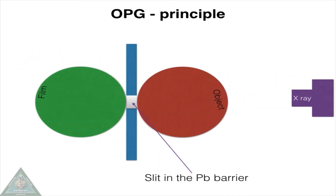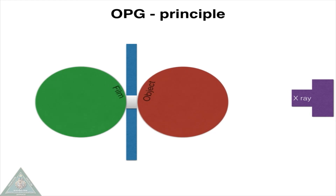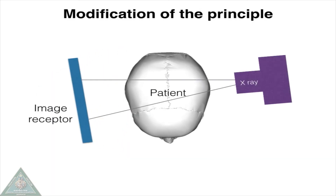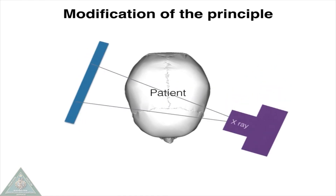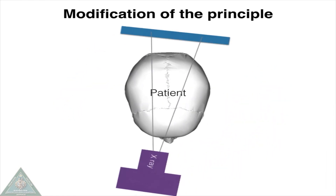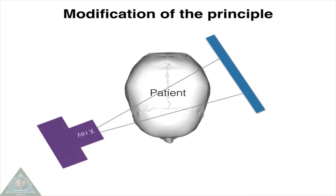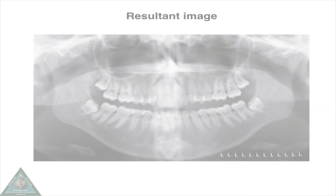OPG or panoramic radiography — the principle: one disc containing the object and the other with the film rotate at the same speed in opposite directions, separated by a lead barrier with a slit in between. The X-ray beam passes through the slit when the object and the film meet in the center. In a slight modification, the patient is static and the X-ray source and the image receptor rotate at the same speed in opposite directions around the patient.